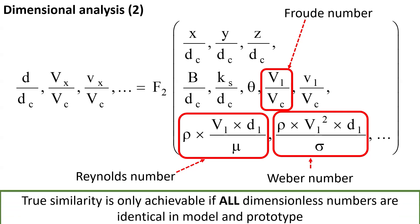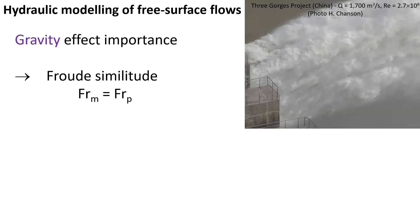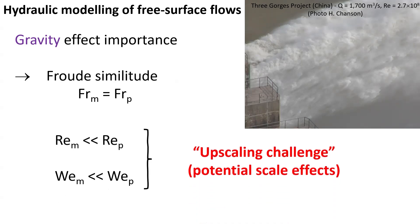True similarity is achievable if all dimensionless numbers are the same in model and prototype, and this can rarely be achieved. In the context of open-channel flow and free surface flow, gravity effects are always uppermost important, and thus we choose a Froude similitude — that is, the Froude number is the same in the model and prototype. Unfortunately, when we use the same fluid in model and prototype, the Reynolds number in the model will be significantly smaller than in the prototype, and similarly the Weber number in the model will be much smaller than in the prototype, which brings upscaling challenges and potential scale effects.